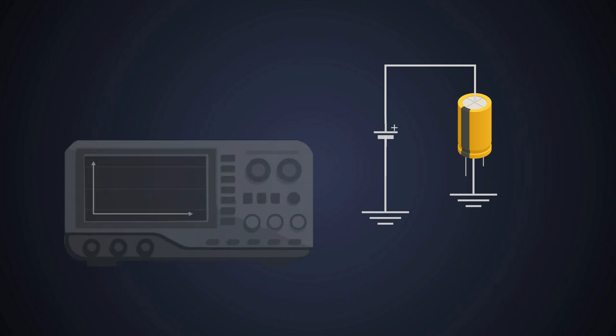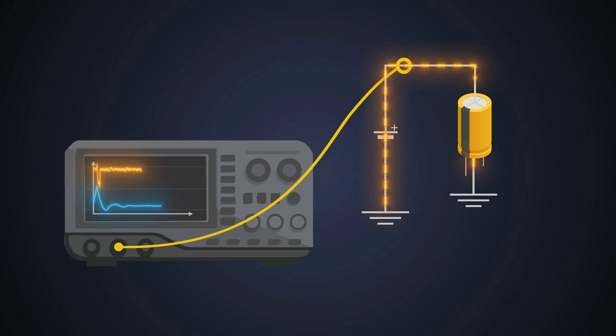When a capacitive load is suddenly connected to VIN, it behaves like a short during startup, asking for a very large current. If uncontrolled, this can drop VIN sharply, damage connectors and power rails, and reduce component life. This inrush current can be calculated like this.